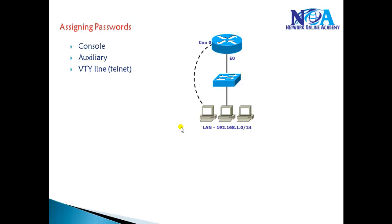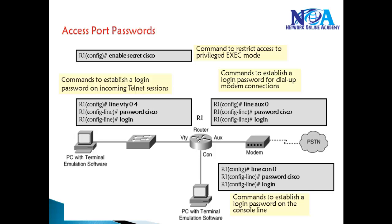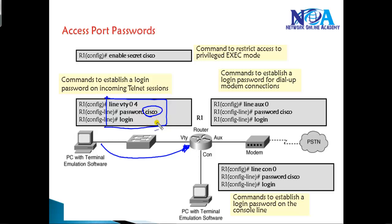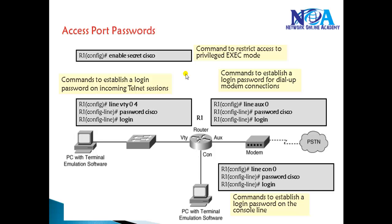These are the three different lines from where we can access a device. Using basic commands, if you want to restrict users on the VTY line for Telnet access, the router will prompt for a password — for example, 'cisco' — and then we need to give a login option. The same applies to the auxiliary line. By default it is 'no login', but we can define a login option so the device prompts for a password whenever a user tries to enter through the command line.